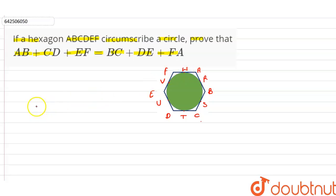So we know the concept of the circle: that is, if tangents are drawn from an external point to a circle, they are equal.